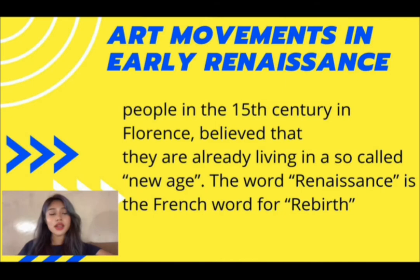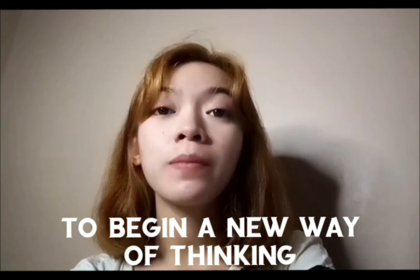We will tackle the characteristics of the movement in the early Renaissance. People from the 15th century of Florence believed that they were already living in the so-called New Age. The word Renaissance comes from the word rebirth. It happened in Florence to take off the old ways of thinking when it comes to philosophy, religion, and art — in simpler words, to begin a new way of thinking. The chosen model by the Florentine artists and intellectuals for this new approach was classical antiquity, because they believed that Greek and Roman art composed an ideal standard of artistic volume.